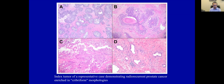Here is a representative tumor from the index tumor demonstrating radio-recurrent prostate cancer enriched in cribriform morphologies. You can see intraductal-type morphology, which was confirmed with basal cell marker in some cases, and in this example, more confluent invasive cribriform prostate pattern 4. The background prostate demonstrated radiation therapy effect.